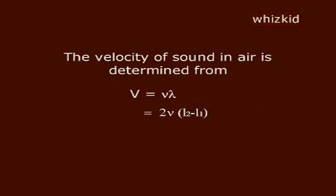The velocity of sound in air is determined from V equals V lambda, that is equal to 2V into L2 minus L1.